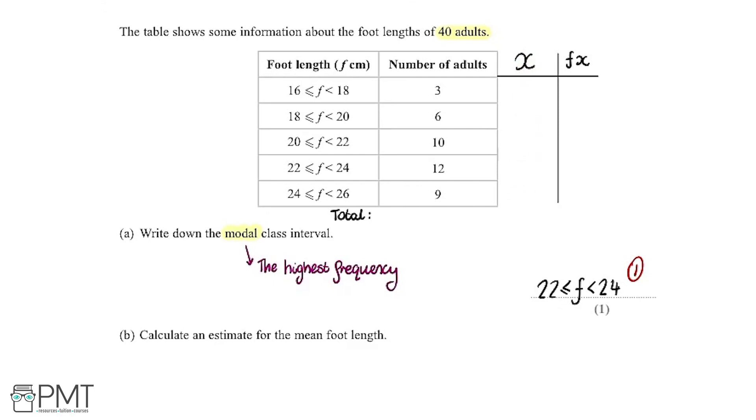To work out the midpoint I'm going to use this group for an example. We do this number plus this number and divide by 2. In this case we've got 16 plus 18 divided by 2 which is 34 divided by 2 which equals 17. So that's the midpoint for this group here. Then we do the same thing for all the other groups.